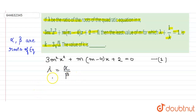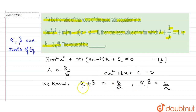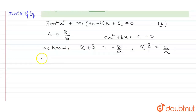We know that alpha + beta = −b/a and alpha·beta = c/a, meaning the sum of roots equals −b/a and product of roots equals c/a, where ax² + bx + c = 0 is our standard equation. According to the standard equation, alpha + beta = −b/a and alpha·beta = c/a.